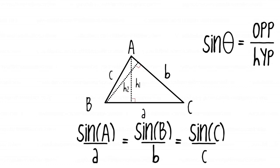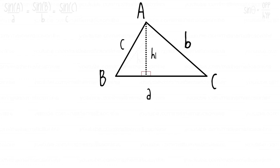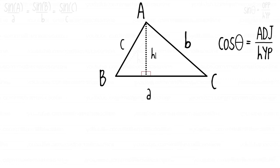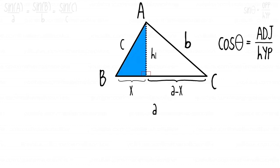Let's go ahead and derive the law of cosines. We are going to use cosine of theta is equal to the adjacent side over the hypotenuse. We have our triangle with sides A, B, and C, and the altitude is h1. The altitude is going to split side a into two segments: the first segment has a length of x, and therefore the remaining segment has a length of a minus x.